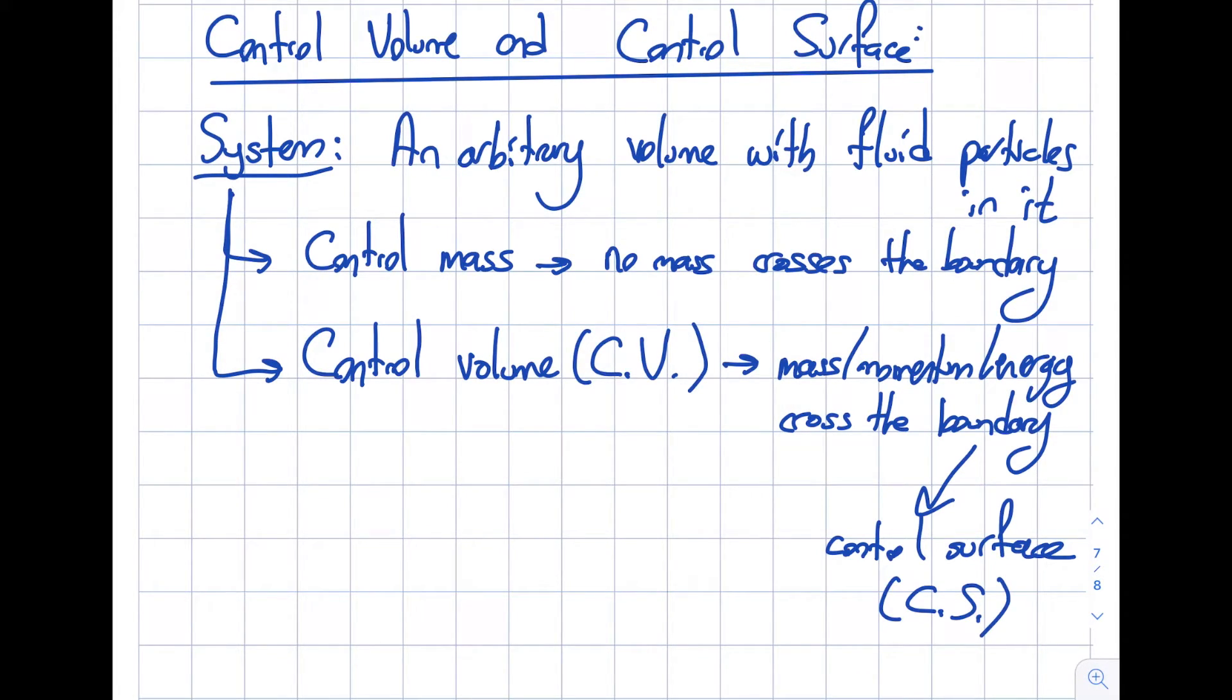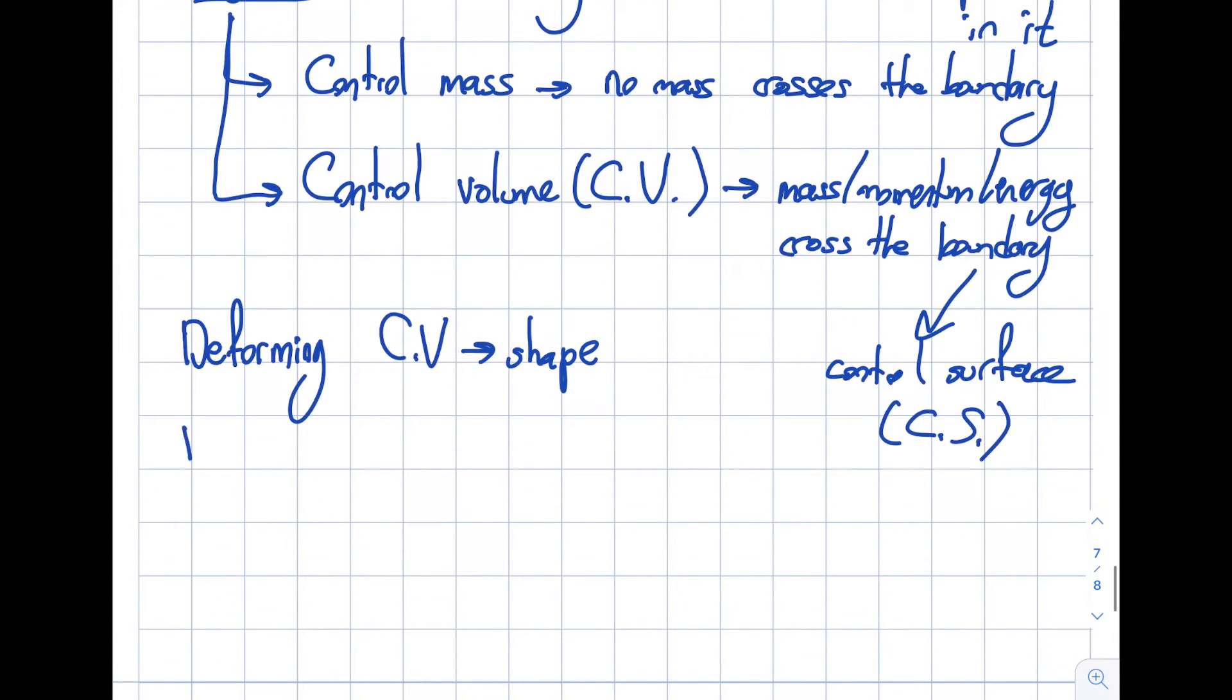So the question is: can the control volume move or can it change shape? Yeah, it does. There's an opportunity for that. Let's say that I pick a balloon, and if I put air in it, there's a mass transfer—a deforming control volume. Basically, this refers to when the shape changes. Like the balloon, if I put more mass into the system, it's going to get larger and larger. That's quite all right, but that will be a little bit harder to analyze.